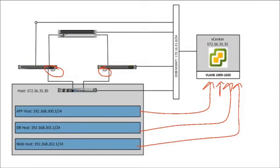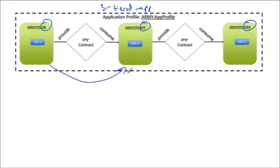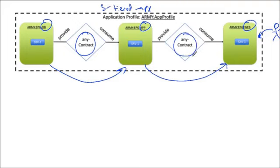I've got a map of what I'd like to do: create an app EPG, database EPG, and web EPG - what Cisco often refers to as the three-tiered app. The theory is that database provides services to the application tier, the application tier provides data to the web tier, and consumers like Tom, Dick, and Harry access the web server. We're only allowing the communication between the three tiers that's absolutely needed, and we'll leverage the 'any' contract just to verify reachability.